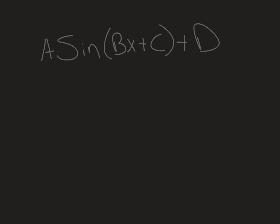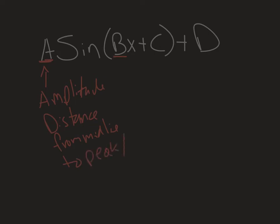Now that we have a basic idea of what sine looks like, we can apply our function transformations. The two that are different for trig functions are A and B. The A is your amplitude — that's the distance from the midline to your peak or valley. By default it's 1. However, if I have y equals 2 sine of x, then it'll oscillate between 2 and negative 2 as opposed to 1 and negative 1.